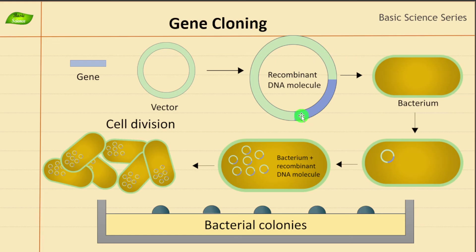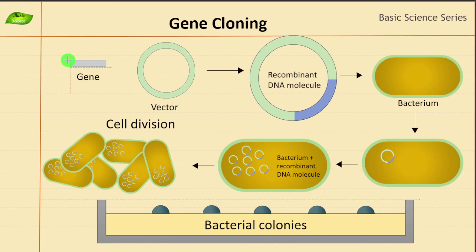If you've seen the structure of the plasmid, you'll understand what the selectable marker refers to. The transformed cells that grow on the antibiotic-containing media are the important ones — only cells that carry the gene of interest and the selectable marker will survive. You can then pick up these colonies, grow them further, because they are the cells containing the gene of interest that we started with.